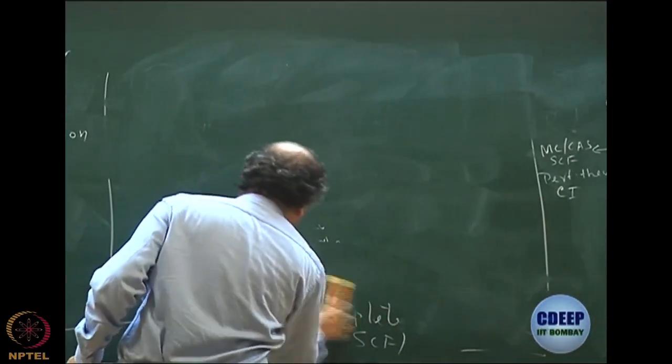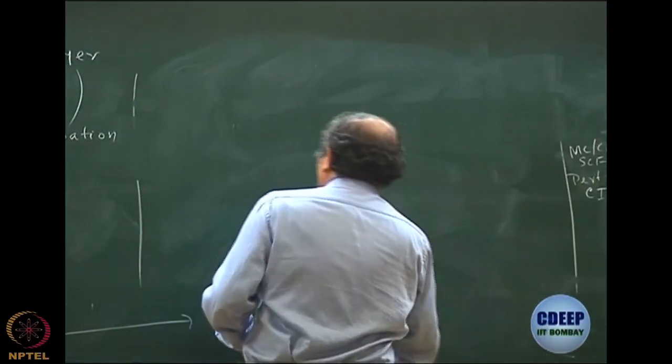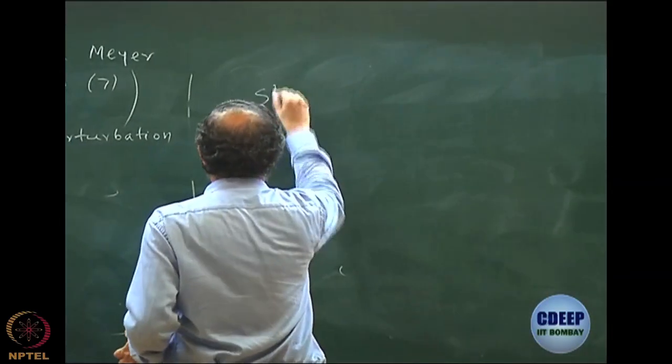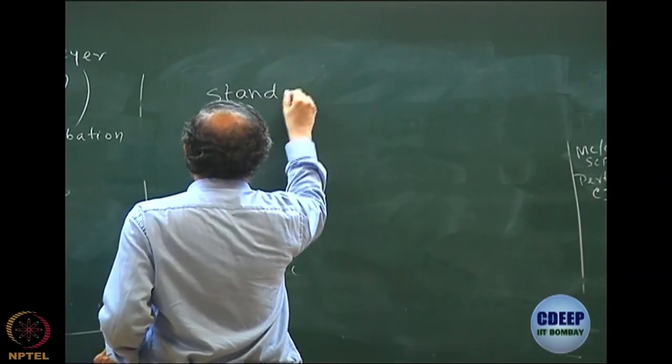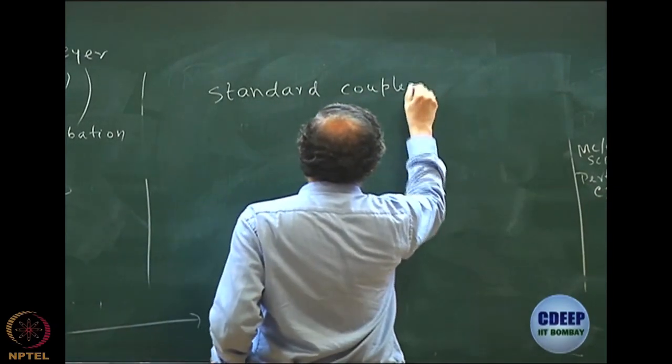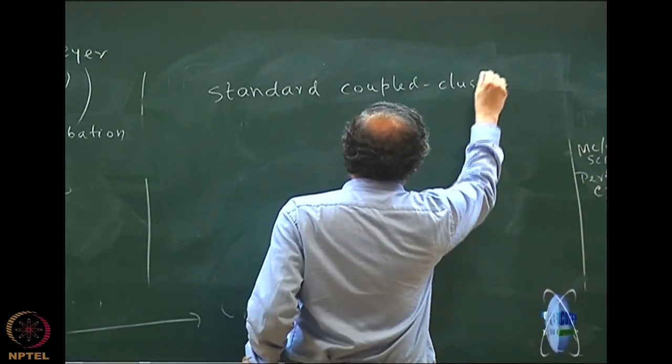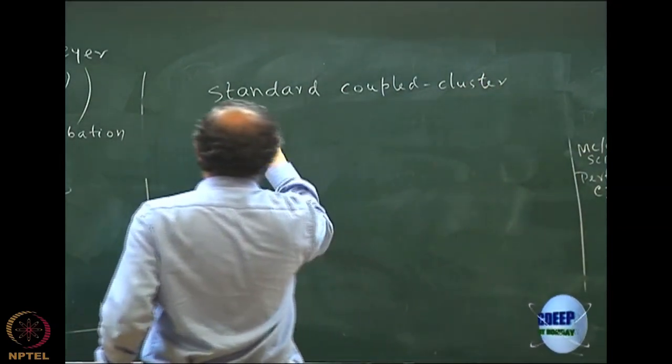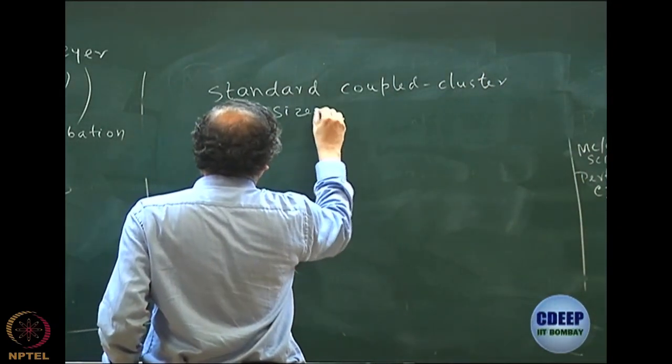So it takes care of the dynamic correlation very well. Normal standard coupled cluster is size extensive which means it has correct N dependence.